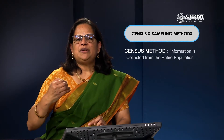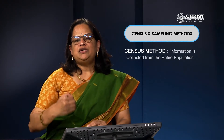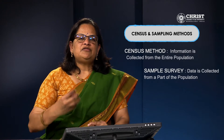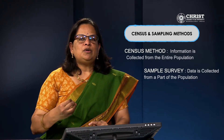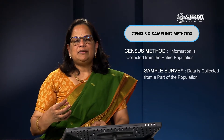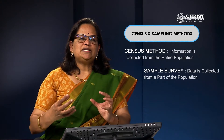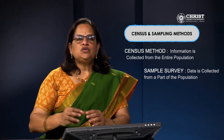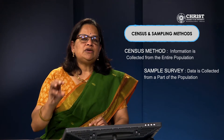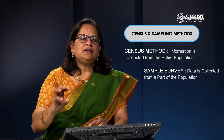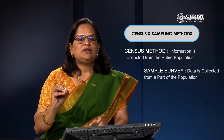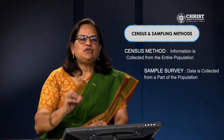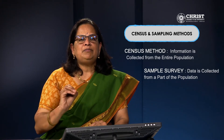When information is collected from the entire population, it is called the census method. If the data is collected from a part of the population, it is called a sample survey. For example, if you want to conduct a survey about 10,000 bank depositors, collecting from all 10,000 depositors is the census method, but collecting from only 1,000 depositors is called a sample survey.